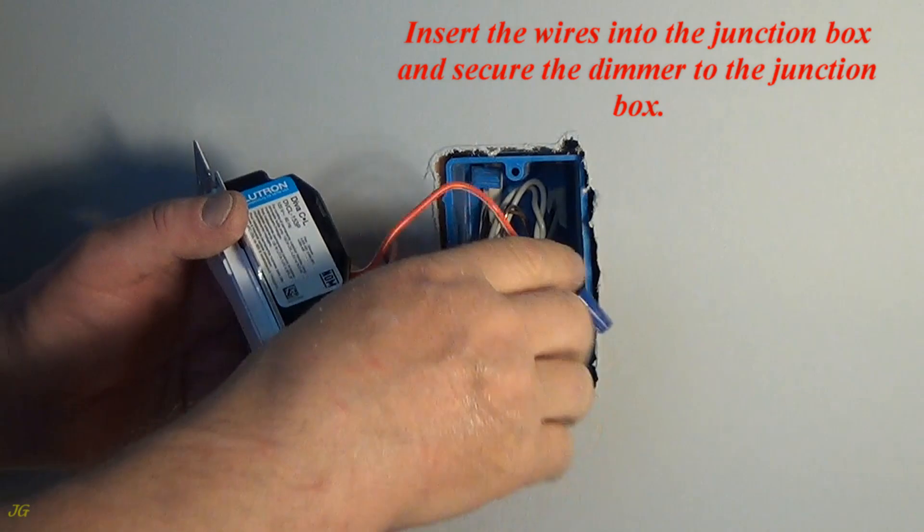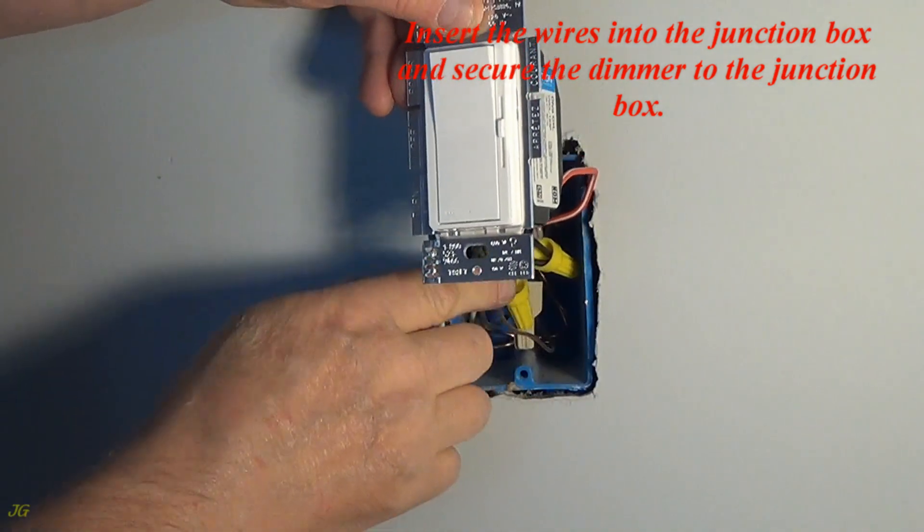Insert the wires into the junction box and secure the dimmer to the junction box.